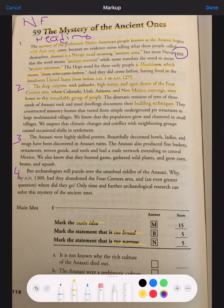They constructed masonry homes that vary from simple underground pit structures to large multi-story villages. We know that the population grew and clustered in small villages. We suspect that climatic changes and conflict with neighboring groups caused occasional shifts in settlement.